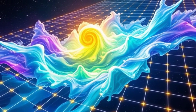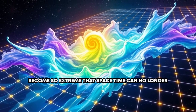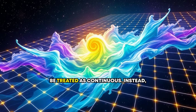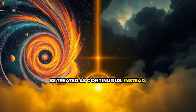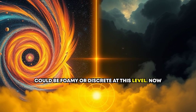At these small distances, quantum fluctuations in spacetime itself become so extreme that spacetime can no longer be treated as continuous. Instead, theoretically, it's believed that spacetime could be foamy or discrete at this level.